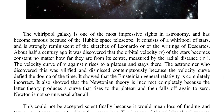About half a century ago, it was discovered that the orbital velocity V of the stars becomes constant no matter how far they are from its centre, measured by the radial distance R. The velocity curve of V against R rises to a plateau and stays there. The astronomer who discovered this was vilified and dismissed contemptuously because the velocity curve defied the dogma of the time. It showed that Einsteinian general relativity is completely incorrect. It also showed that Newtonian theory is completely incorrect, because the latter produces a curve that rises to the plateau and then falls off again to zero.